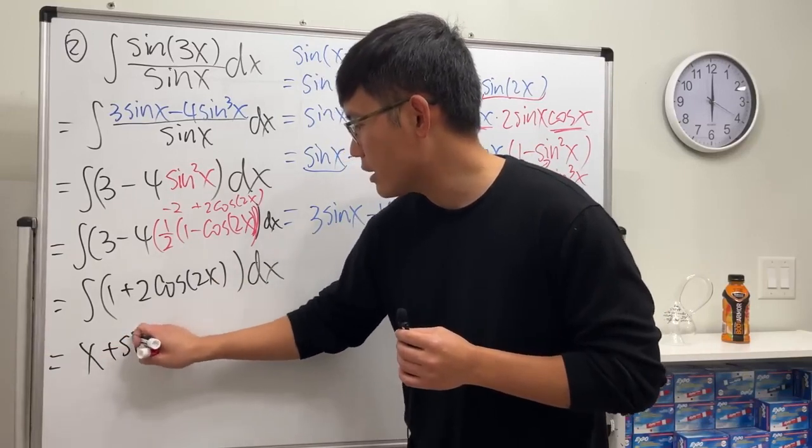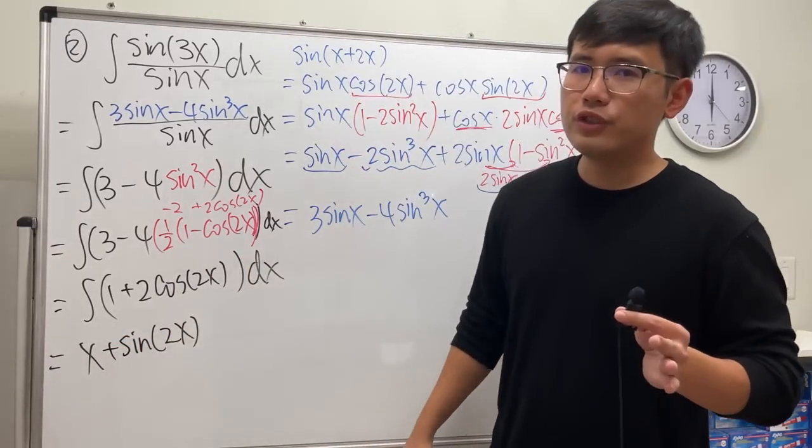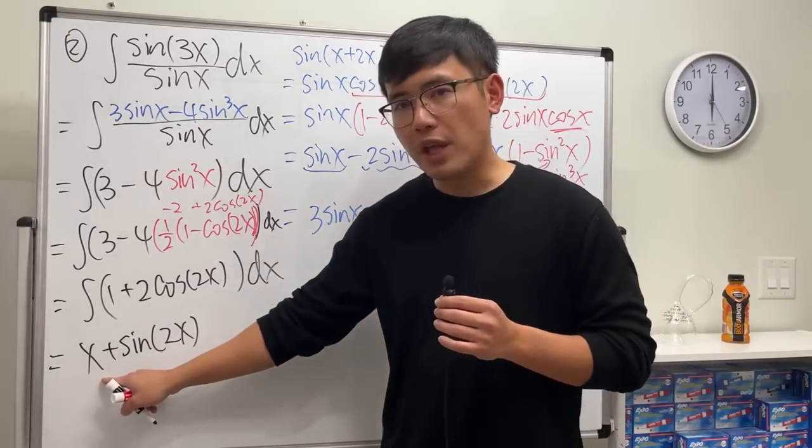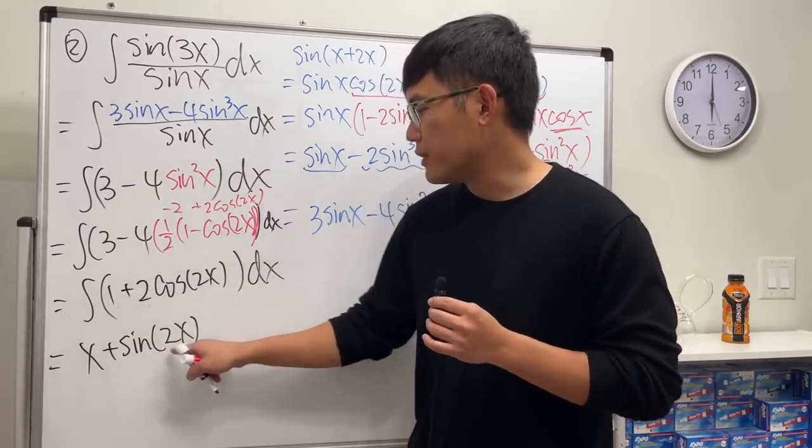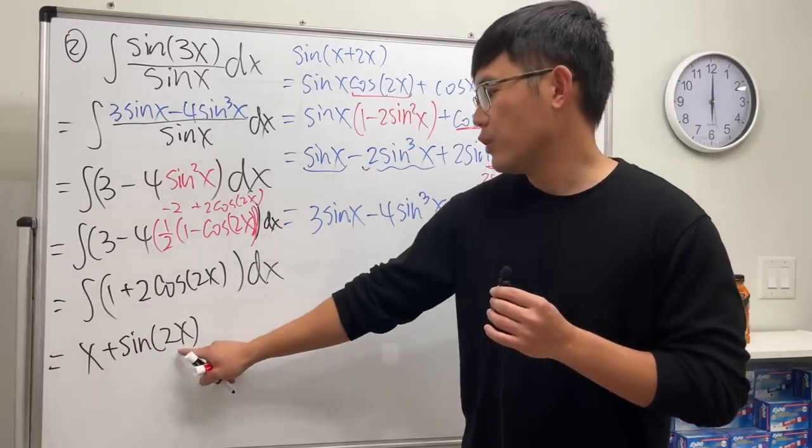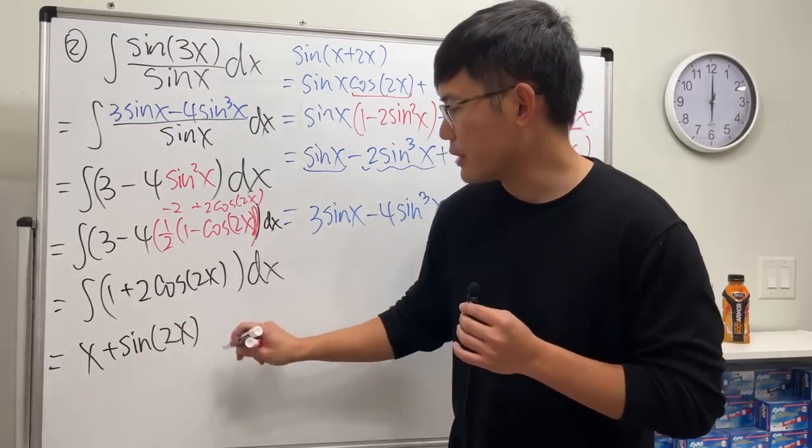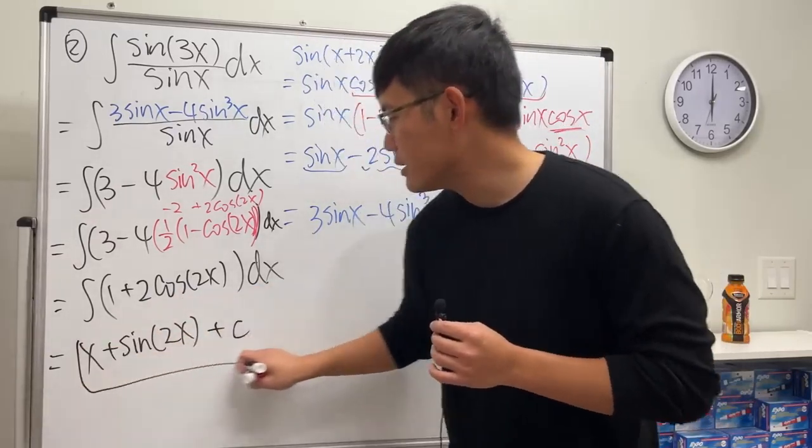You can also differentiate this real quick. Take the derivative of x, we get 1. Take the derivative of this - don't forget the chain rule, we have to multiply by the 2, right? Sine gives a cosine of that, so with that we are done.